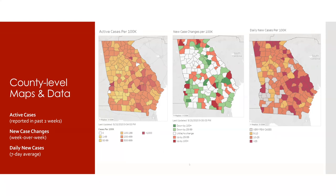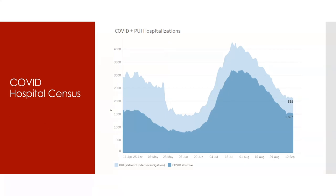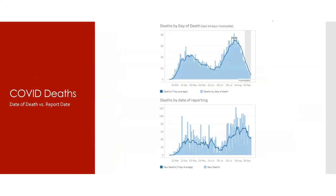On the hospitalization graph, she started with confirmed COVID patients, then added patients under investigation once a second dashboard with historical data became available. She used a stacked bar chart so you can look at just confirmed COVID patients or the total of anyone who has or might have COVID in Georgia. Hospitalizations have been going down significantly, with a small plateau last week that may have been a reporting changeover.